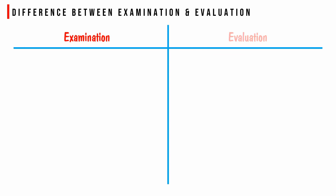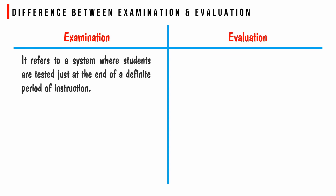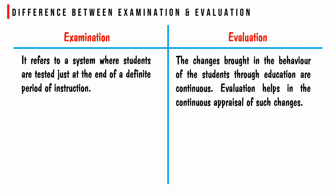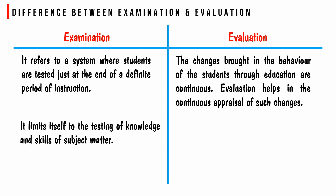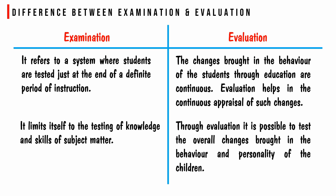The main differences between examination and evaluation are: examination refers to a system where students are tested just at the end of a definite period of instruction, but in evaluation, the changes brought in the behavior of the student through education are continuous, and evaluation helps in the continuous appraisal of such changes. Examination limits itself to the testing of knowledge and skills of the subject matter, but through evaluation it is possible to test the overall changes brought in the behavior and personality of the child.